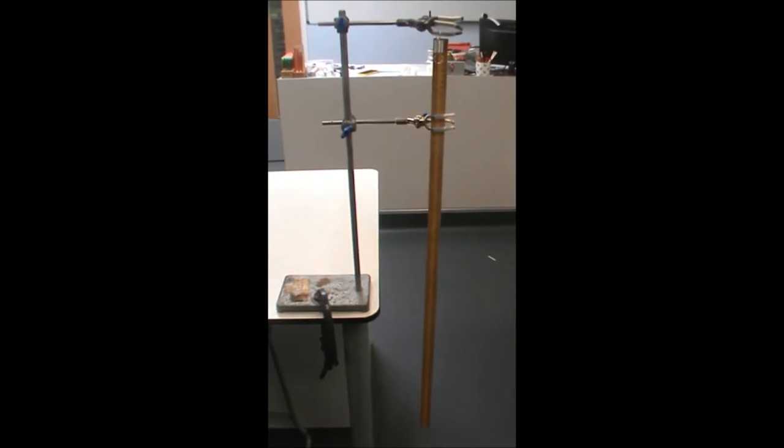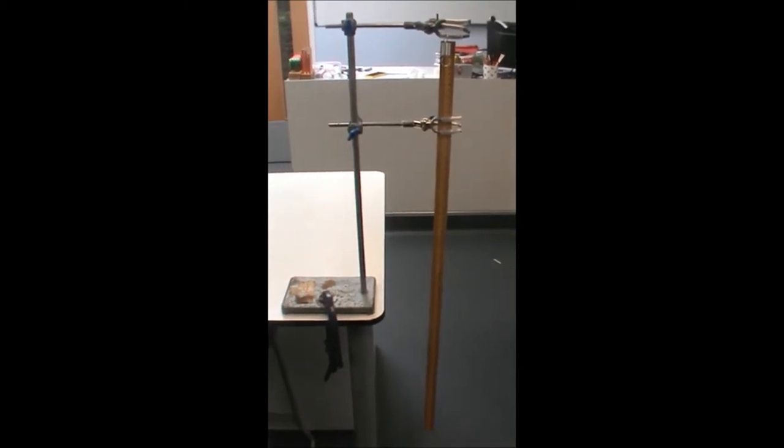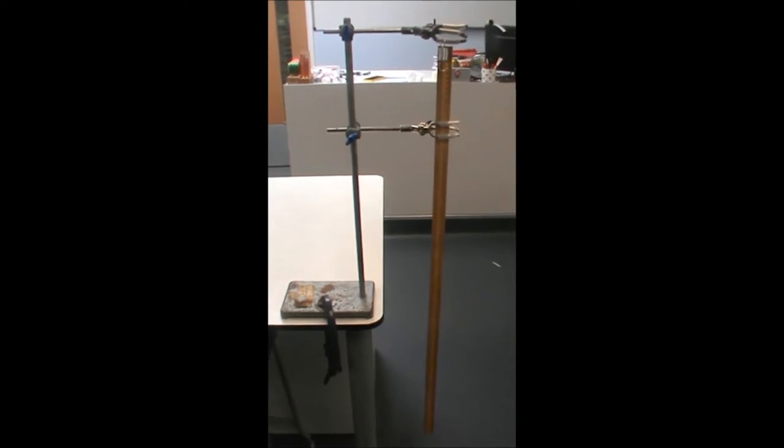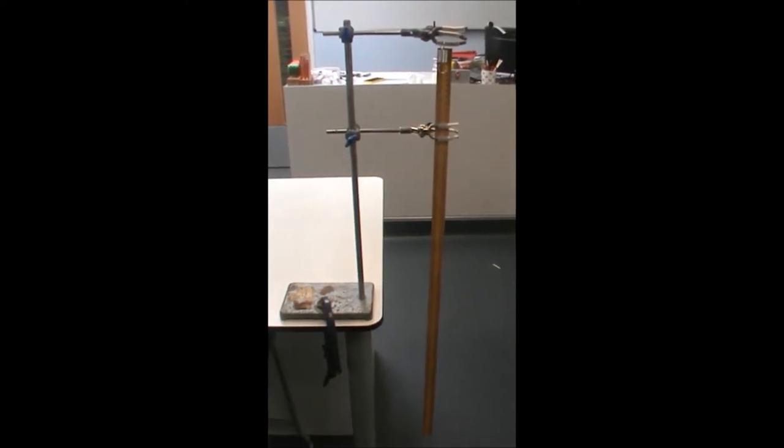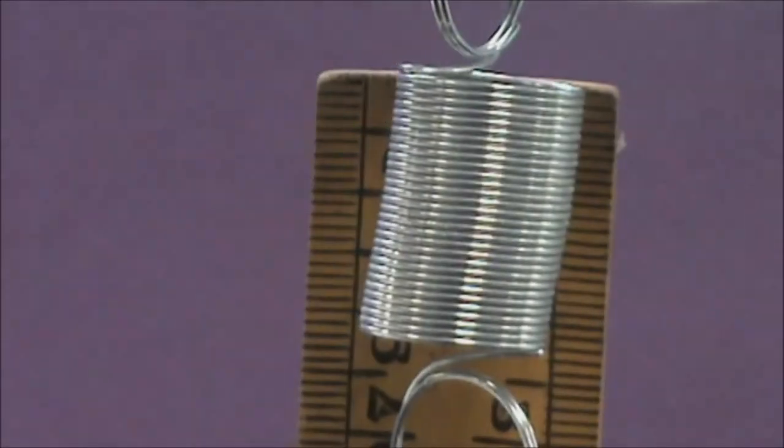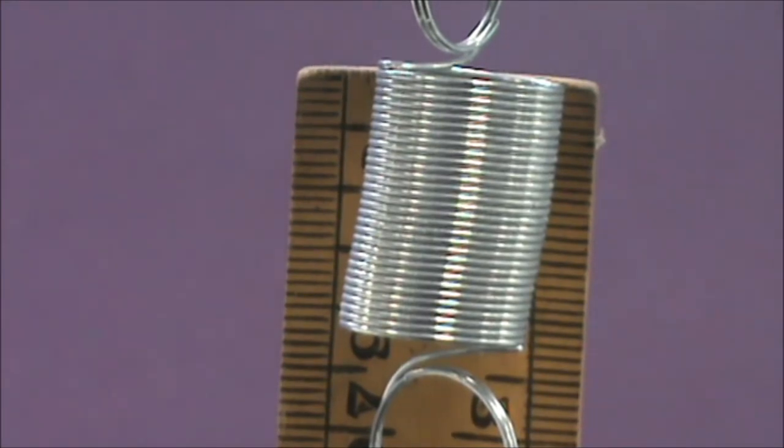So here we have the setup all ready to go. We've got our clamp stand clamped to the desk to prevent it toppling over, our meter rule clamped in the clamp stand, and our spring clamped at the top of the ruler in line with the very edge of the ruler. The first thing that we need to do is take a measurement of the spring with no mass added, and here we can see that our spring is 2.2 cm long.